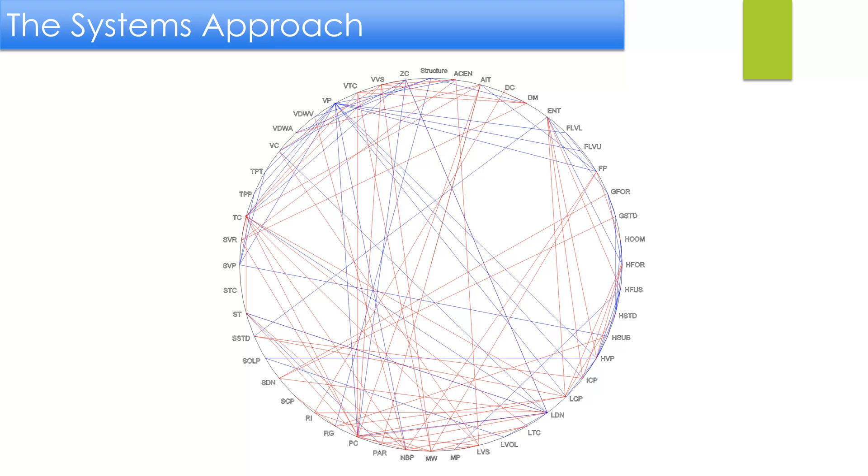The blue lines connecting two different properties represent exact, thermodynamically rigorous inter-property relationships. For example, here is the line for the Clapeyron equation for vapor pressure and heat of vaporization.